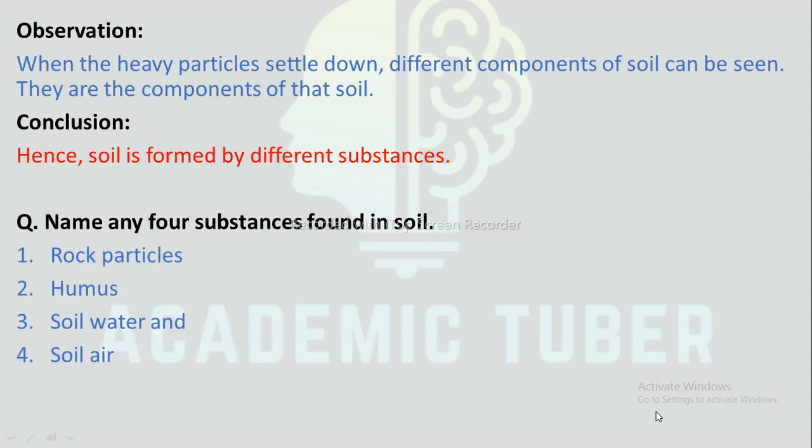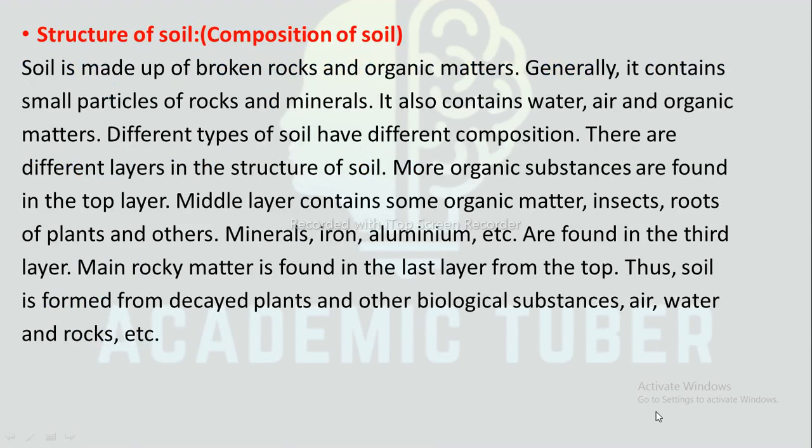Name any four substances found in soil: rock particles, humus, water, and air. Composition of soil: Soil is made up of broken rocks and organic matter. It generally contains small particles of rock and minerals, and also contains water, air, and organic matter. Different types of soil have different compositions.